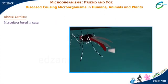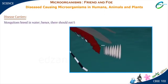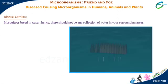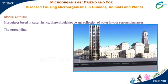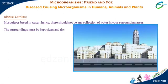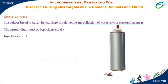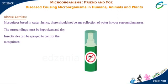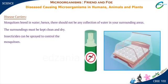Mosquitoes breed in water. Hence, there should not be any collection of water in your surrounding areas. The surroundings must be kept clean and dry. Insecticides can be sprayed to control mosquitoes. One must use mosquito repellents and mosquito nets to prevent any infection.